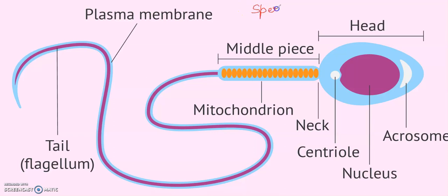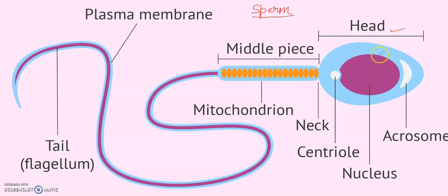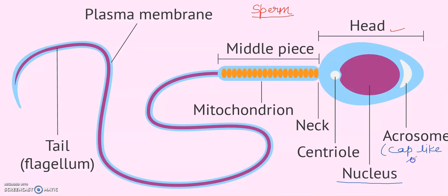This structure is called sperm, and I will tell you about the basics. In this picture you can see this is the head region, which is a slightly oval part and it contains a large nucleus. You can see this part is called nucleus. Over the nucleus is present a cap-like structure which is called the acrosome.